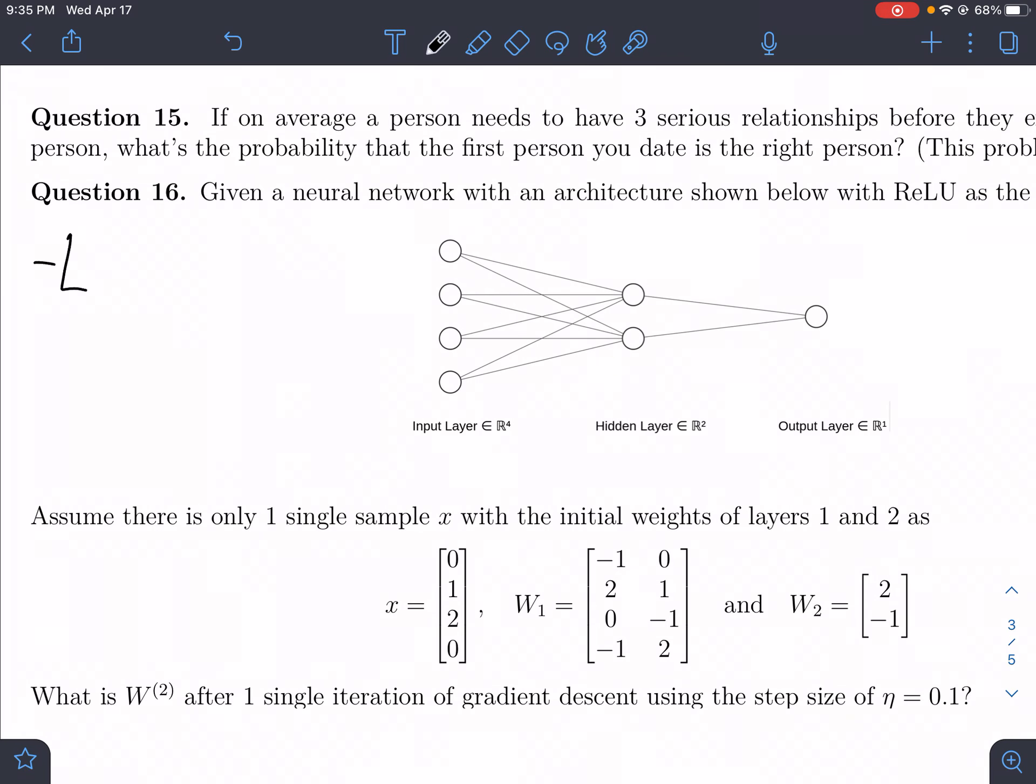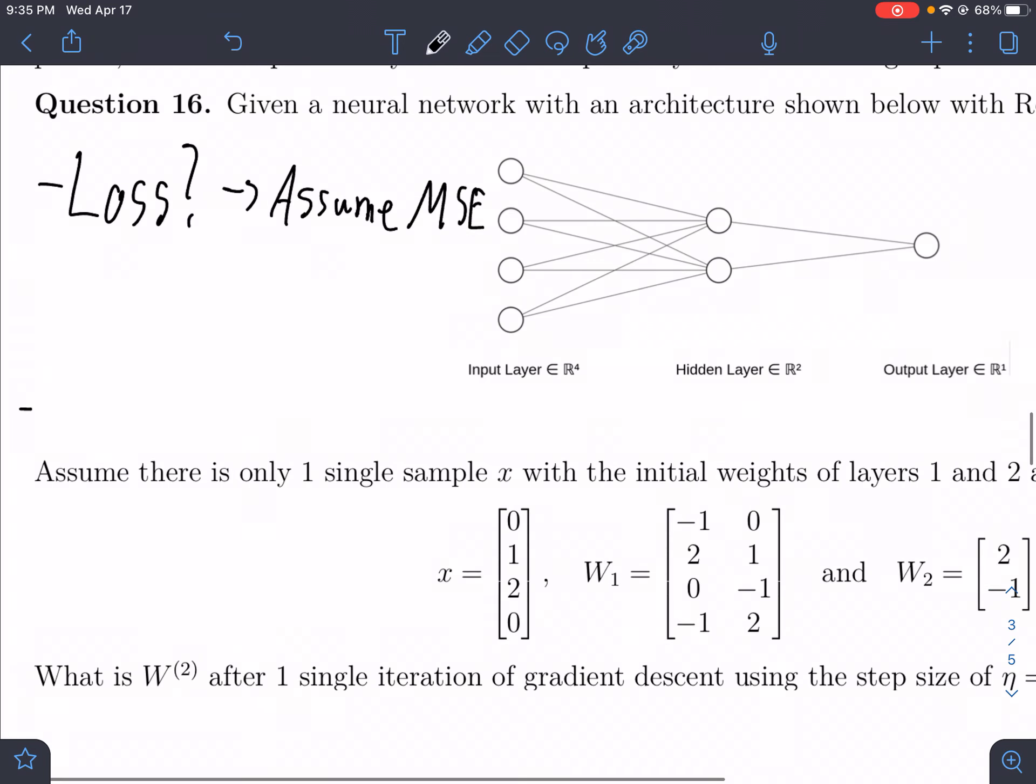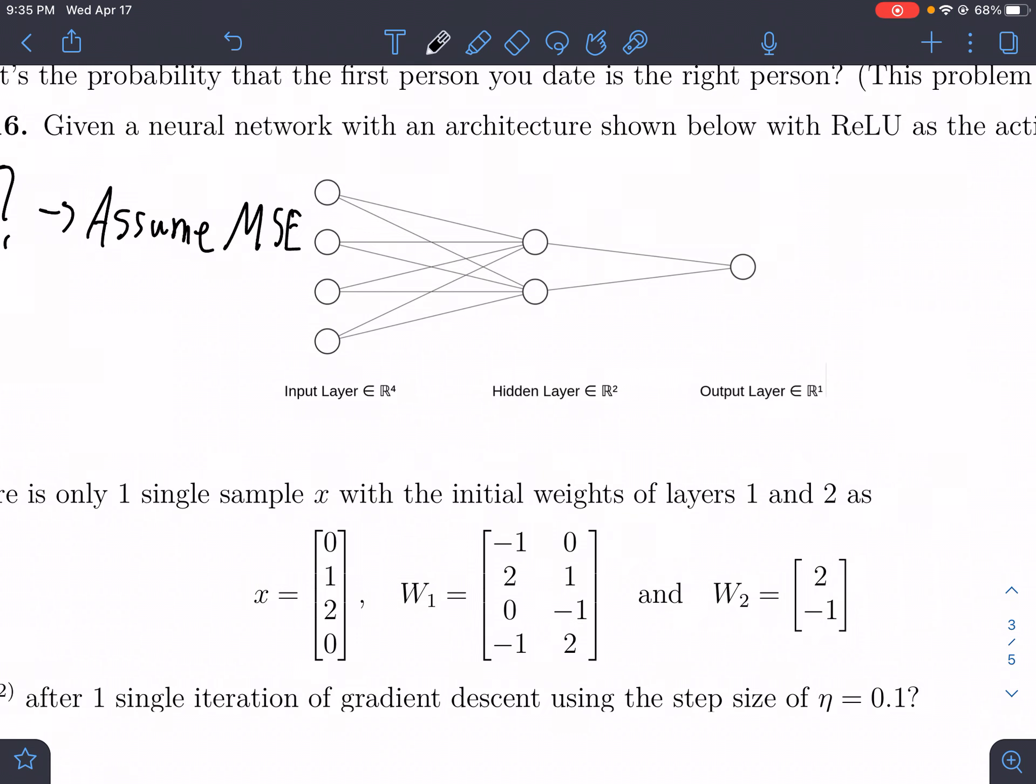For any neural network, you need to specify your loss function. We're not actually given one. In the case that you're not given a loss function, both in this class and in the future, it's a pretty safe bet to assume MSE. The other thing we're not given is what our true value is, our label yi. Unfortunately, you can't just assume a value of yi, so you're gonna have to work with it as a variable, but it doesn't mean the problem is impossible.